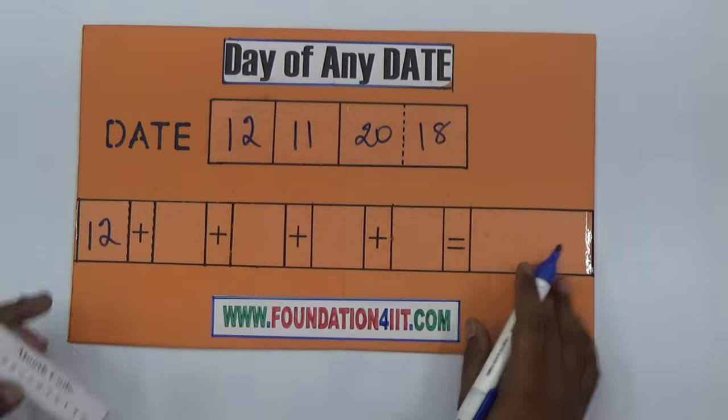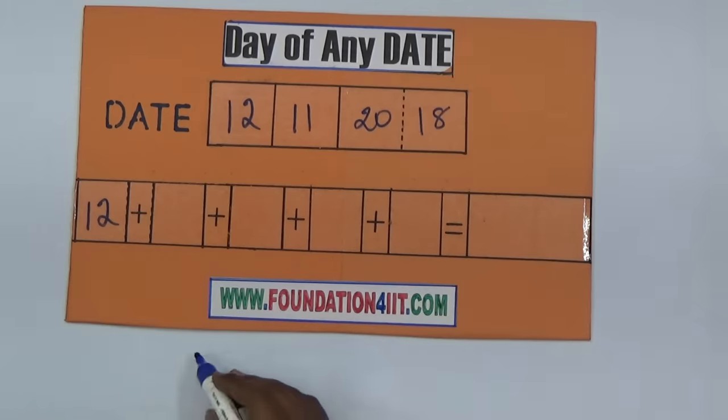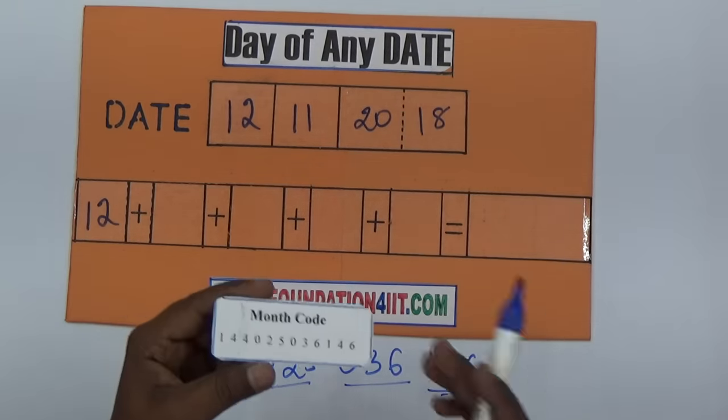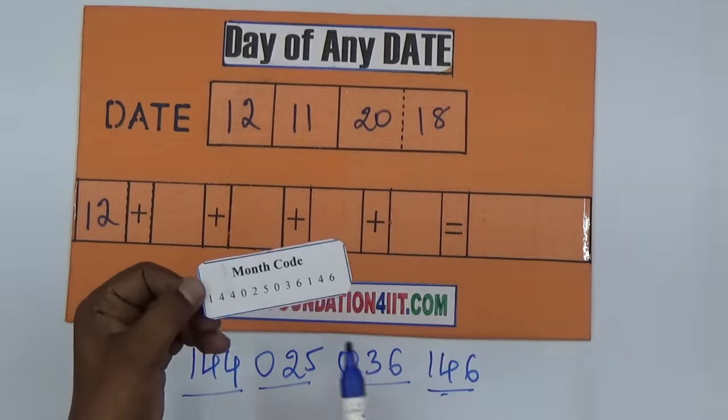You can remember it in a simple way: one, four, four, zero, two, five, zero, three, six and one, four, six. Twelve squared, five squared, six squared, and just one, four, six. This month code you need to remember.